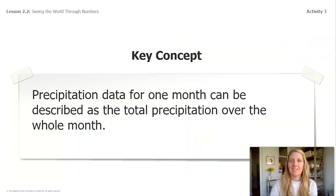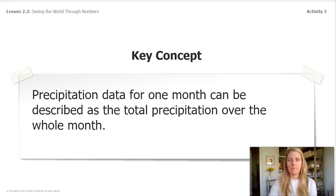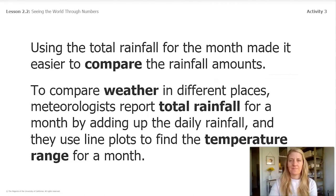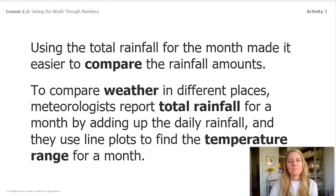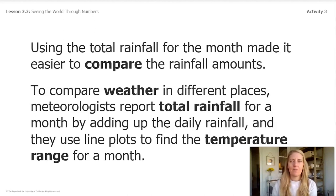Here is another key concept for today: precipitation data for one month can be described as the total precipitation over the whole month. Using the total rainfall for the month makes it easier to compare rainfall amounts. To compare the weather in different places, meteorologists — just like you — report the total rainfall for a month by adding up the daily rainfall, and they use line plots to find the temperature range for a whole month.